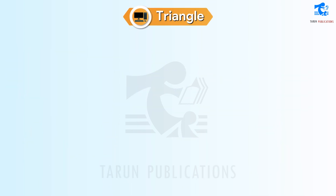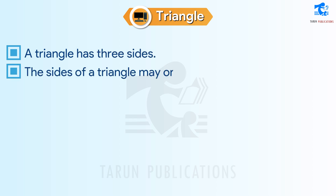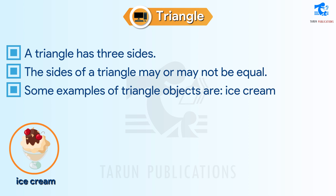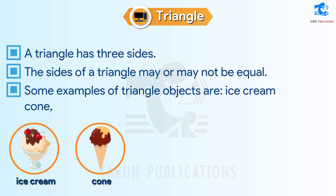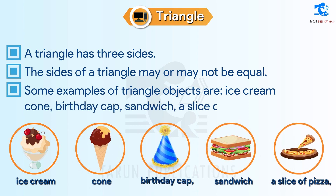Triangle. A triangle has three sides. The sides of a triangle may or may not be equal. Some examples of triangular objects are ice cream cone, birthday cap, sandwich, a slice of pizza, etc.